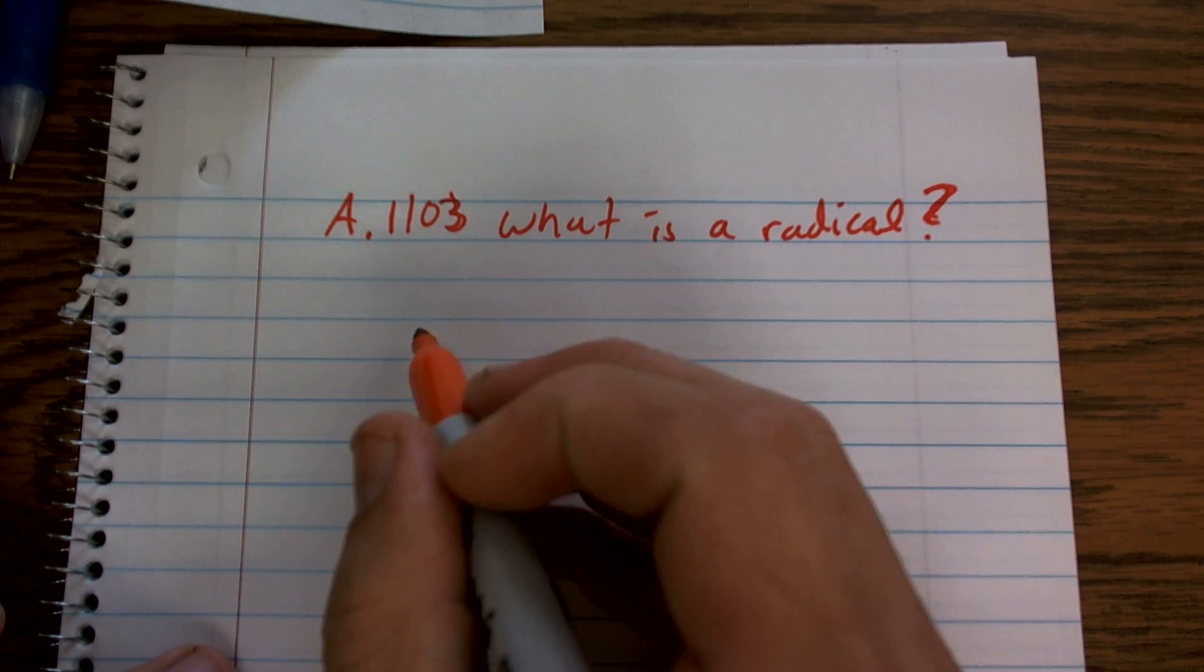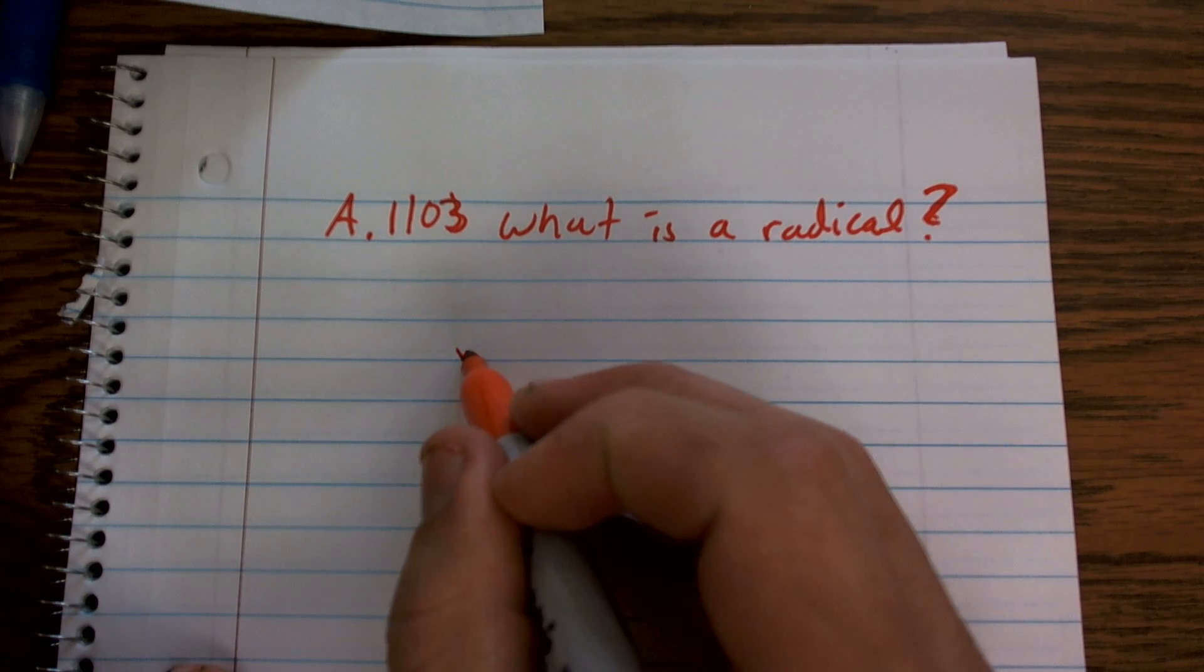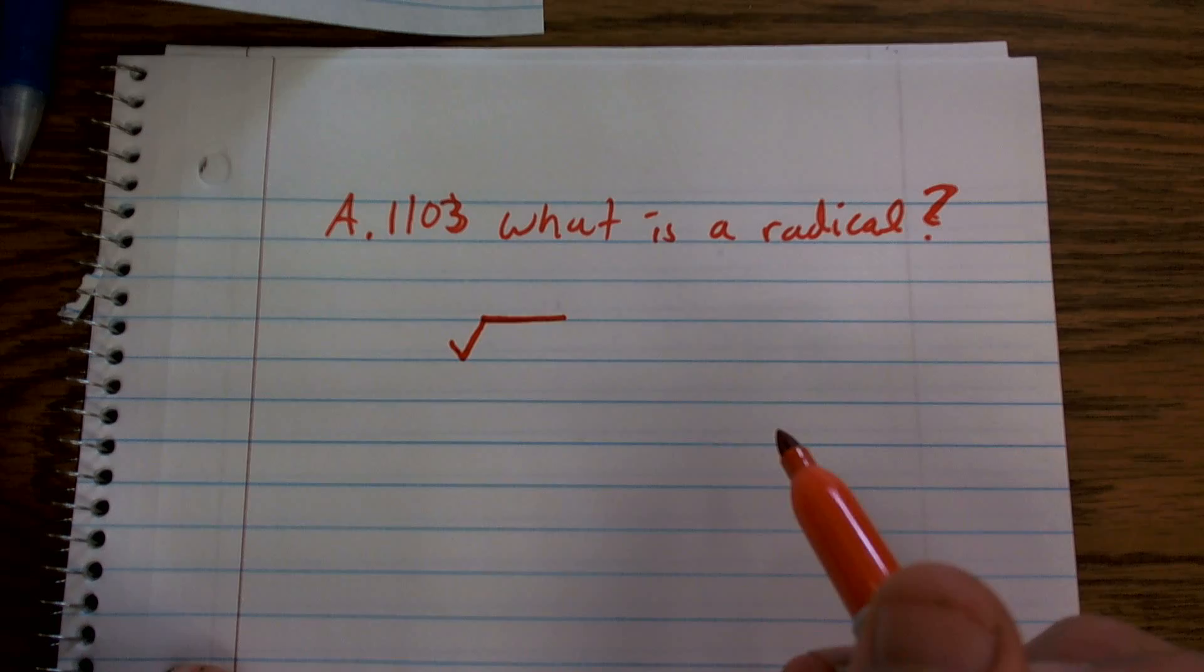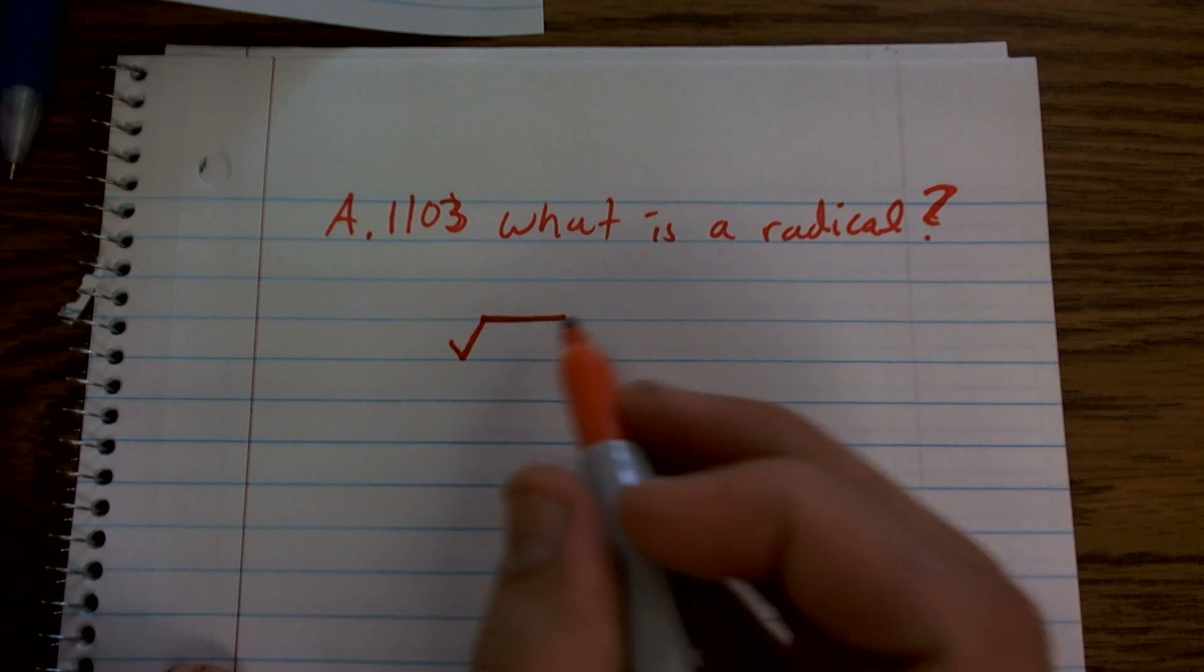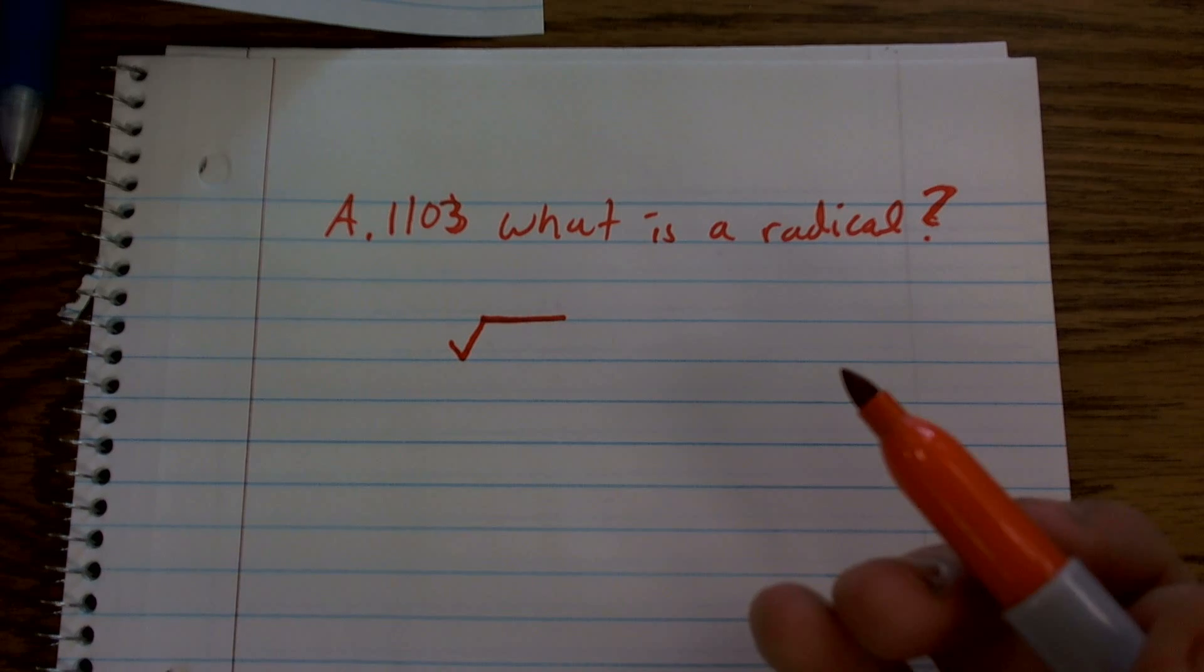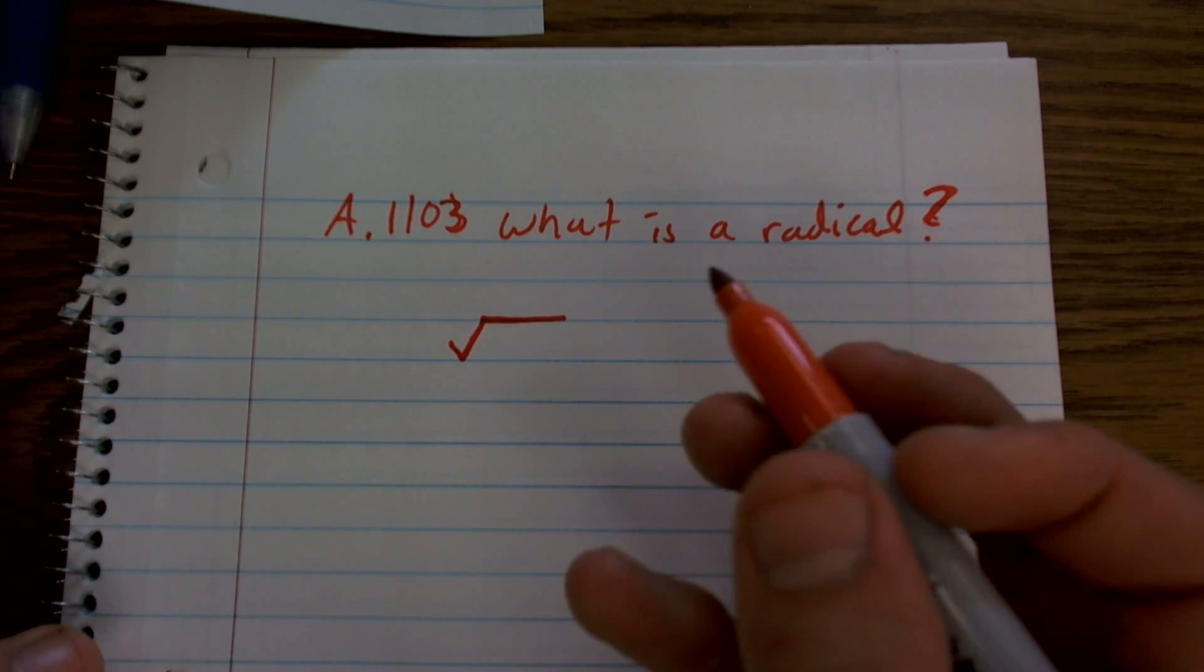There's a lot of different types of radicals that we're going to look at, but radical basically means we're going to be dealing with this symbol, which is your radical symbol, and then we're going to be dealing with the radicand, which is going to be a number under your square root symbol.